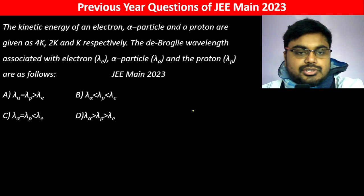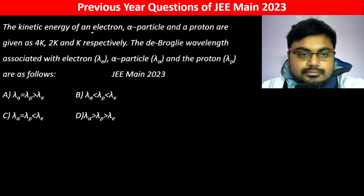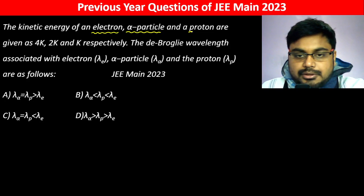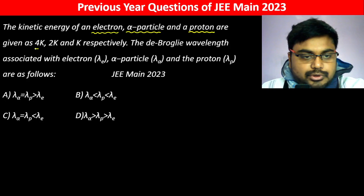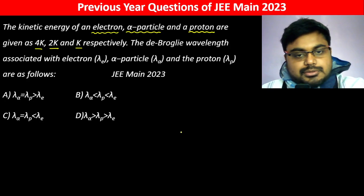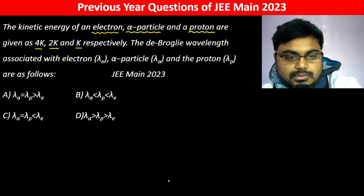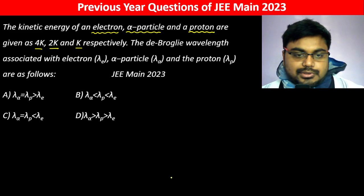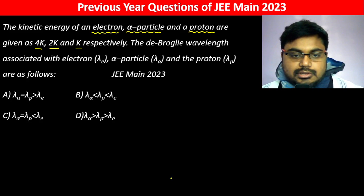The kinetic energy of an electron, alpha particle, and a proton are 4k, 2k, and k respectively. The de Broglie wavelength associated with the electron, alpha particle, and the proton are as follows.